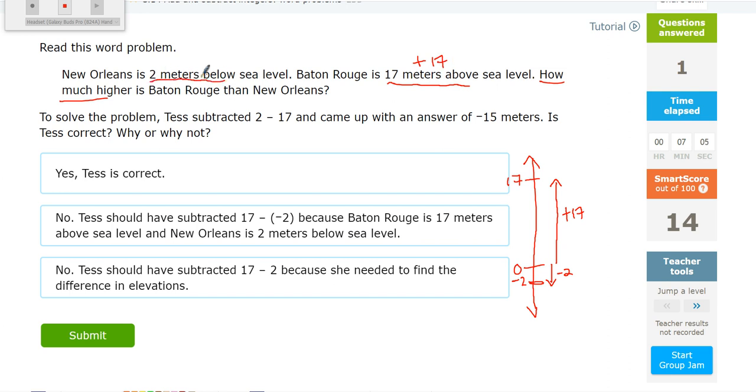So it says how much higher, so really all they're asking me for is the distance from Baton Rouge all the way down to New Orleans. Because they're asking how much higher, we know that that's subtraction. So the answer to this question is 17 minus negative 2, which would just be 17 plus positive 2 because of the keep change change, which should be 19.